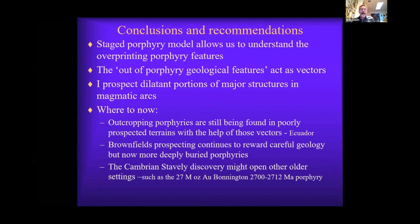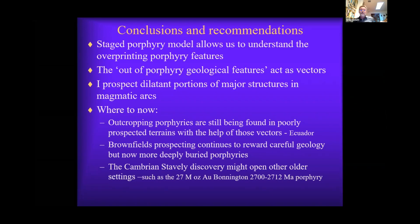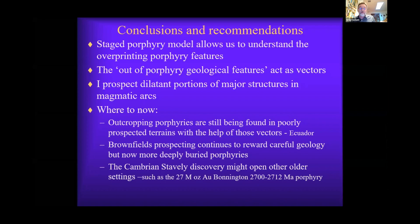So conclusions: our staged model for porphyry development allows us to understand the overprinting features. Dave Lowell's model was good, but it's a long time ago. The outer porphyry geological features act as vectors towards mineralisation. I like to prospect dilatant portions of major structures. Where to now? Outcropping porphyries are being found in poorly prospected terrains with the help of those vectors, such as in Ecuador. Brownfields prospecting continues to reward careful geology — perhaps looking at Stavely in a Cambrian arc, or at the 27-million-ounce Bonnington gold deposit as an Archean porphyry. Thank you. Many thanks, Dr. Greg Corbett.